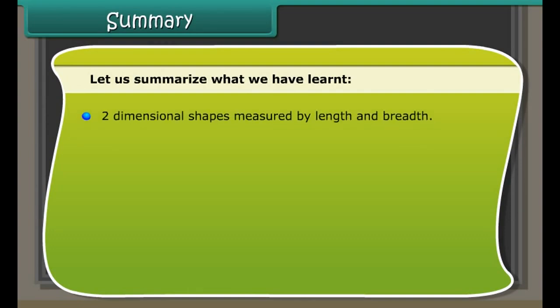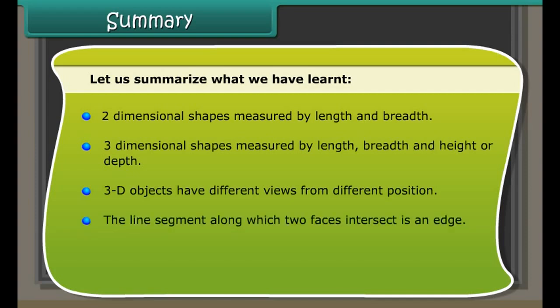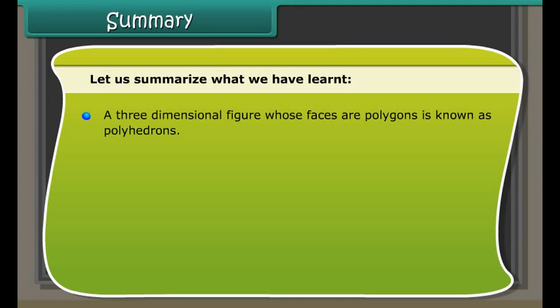Prisms are classified according to their bases. A triangular prism is composed of two triangular bases and three rectangular sides. A pentagonal prism has a pentagon as its base. A prism is called a right prism if the lateral edges are perpendicular to the bases; if they are not, it is called an oblique prism.